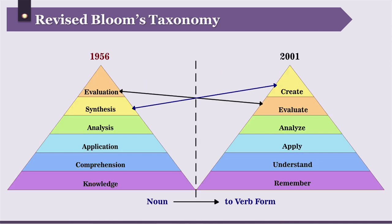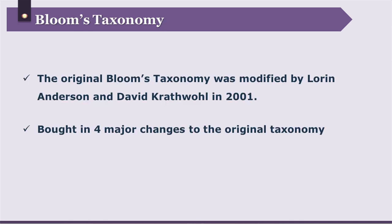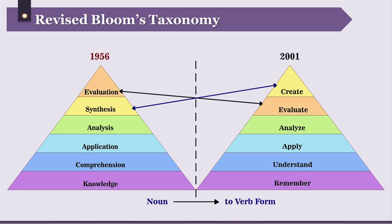Now you are taking a look at a picture which is the comparison between Revised Bloom's Taxonomy and Bloom's Taxonomy. The picture on the left-hand side shows Bloom's Taxonomy and the picture on the right-hand side shows Revised Bloom's Taxonomy. Lauren Anderson and David Crathwall were team members of Bloom's when he came up with the original Bloom's Taxonomy. Anderson and Crathwall revised it in 2001 and brought in four major changes. They changed the names of the levels from noun to verb form: knowledge became remember, comprehension became understand, application became apply, and analysis became analyze.